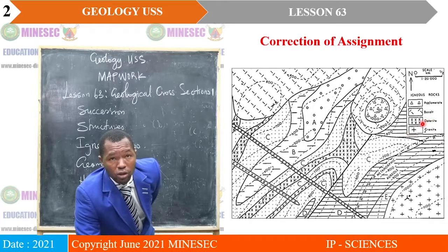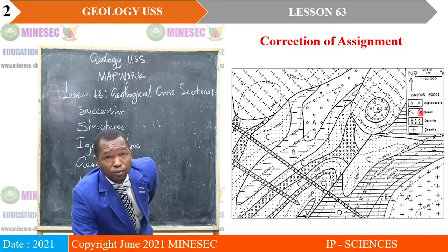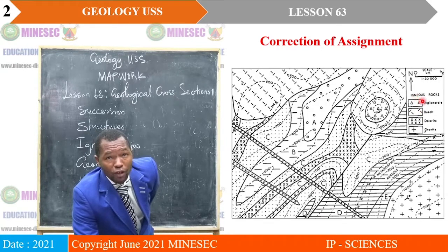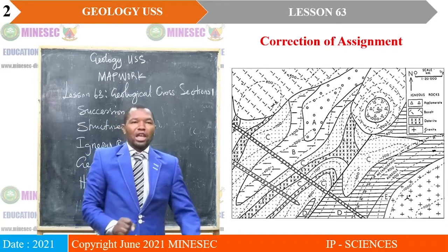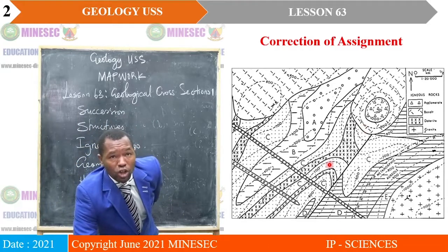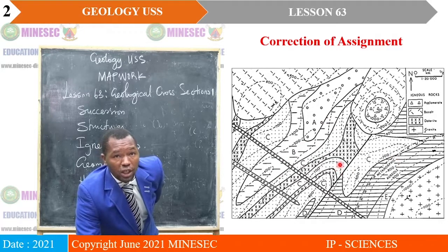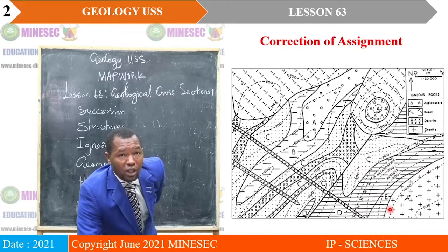You have the granite and you have dolerite. Granite is a major intrusion; dolerite is a minor intrusion. Then basalt, which is lava flow. And then you have agglomerates, which are pyroclasts. From our map, we realize that the succession is represented by beds A, B, C, D, and E.